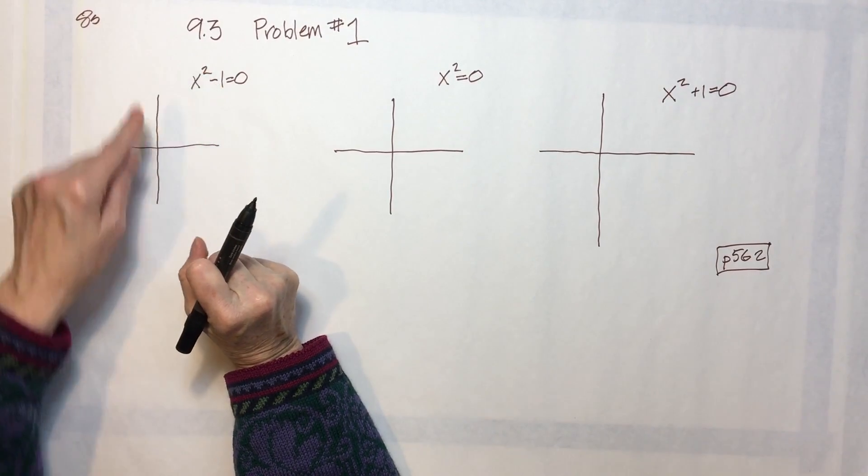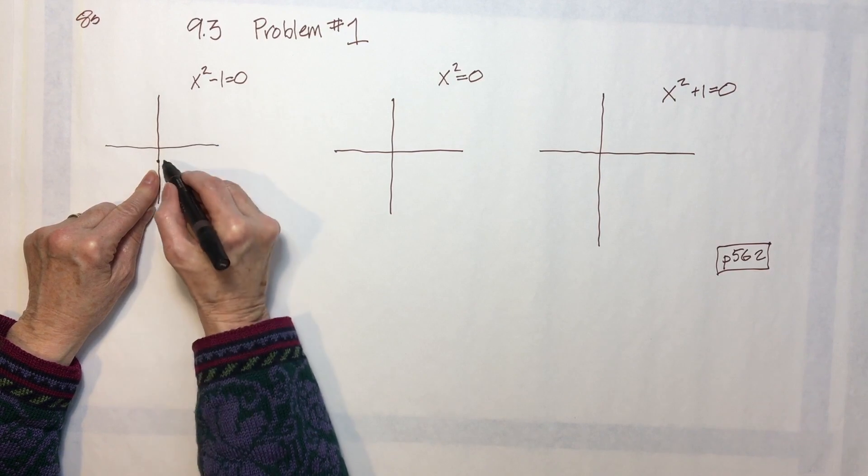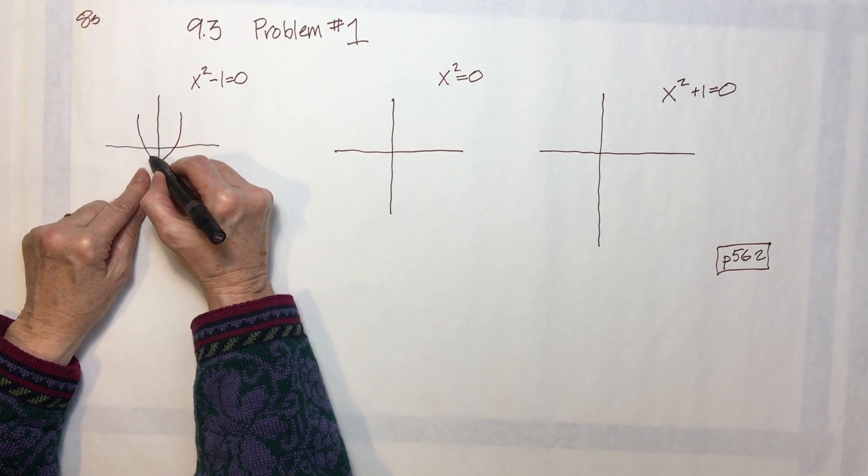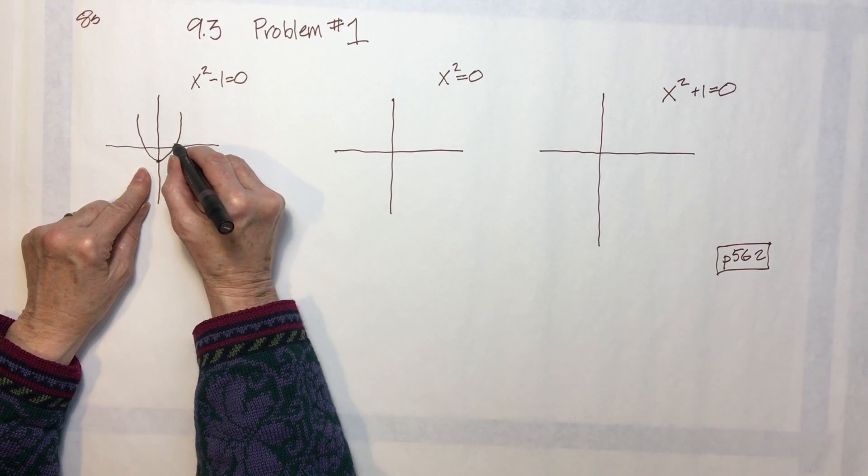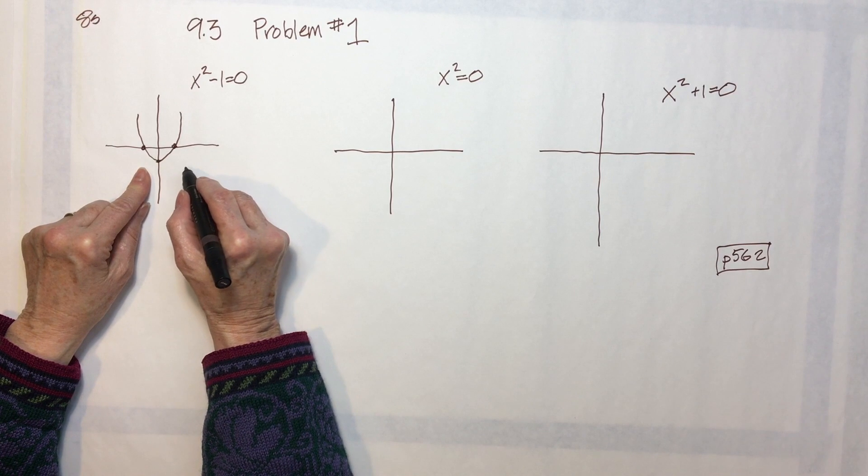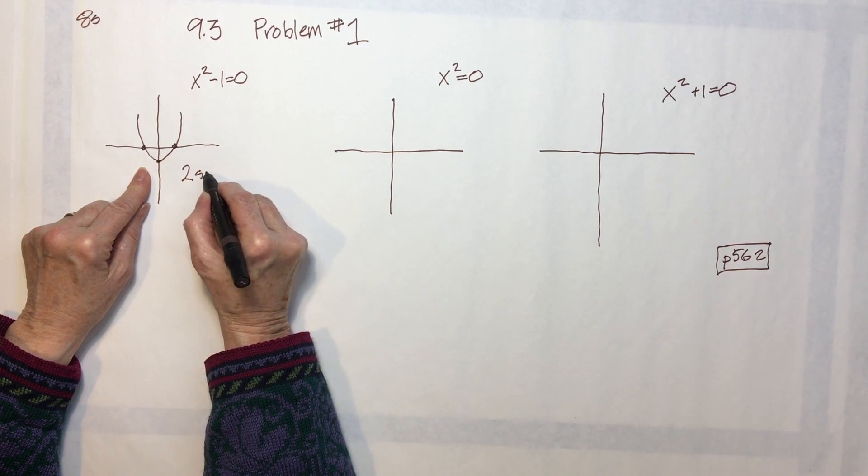But there is a c, and it's a negative one, so it's going to start down here. And it's positive, so it's going to curve up. And we see that it crosses the x-axis twice, so it has two solutions.